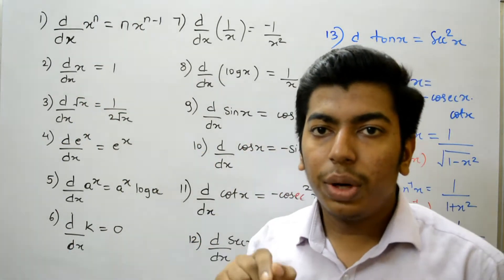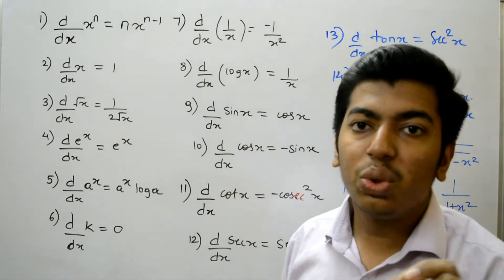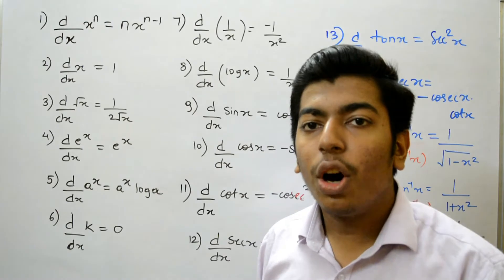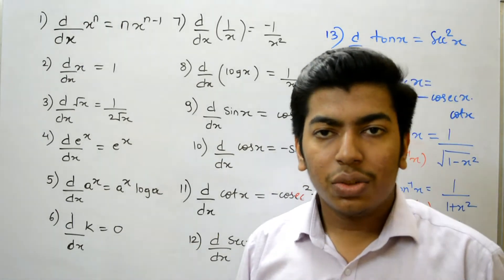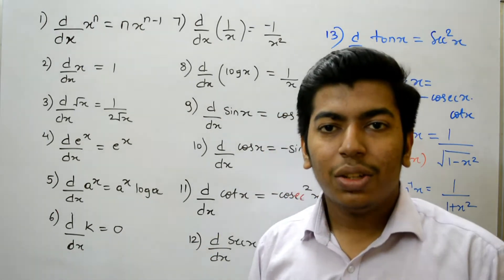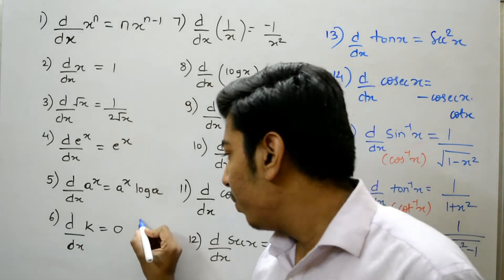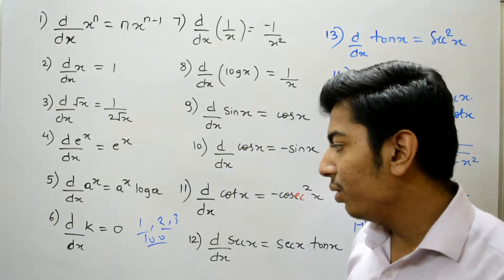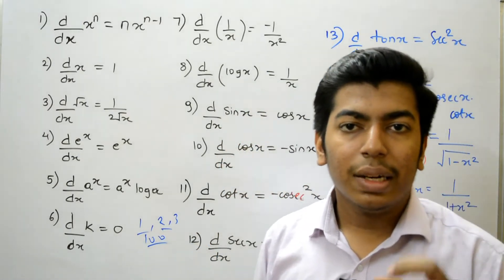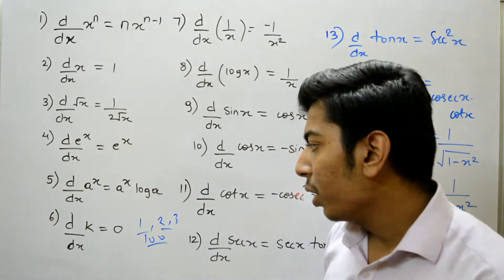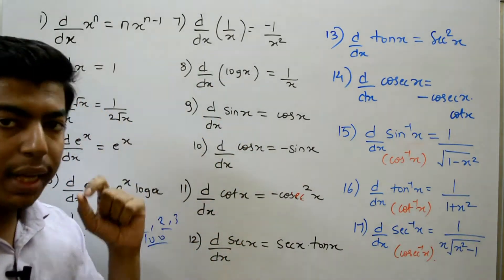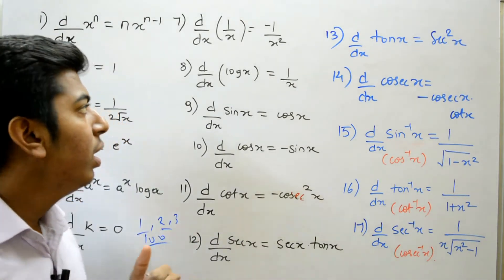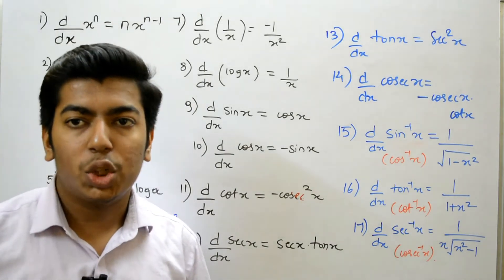The derivative of root x is 1 upon 2 root x. The derivative of e raised to x is equal to e raised to x. The derivative of a raised to x is equal to a raised to x times log a. The derivative of k is 0, where k is a constant term — for example, 1, 2, 3, 100 — all are constant terms with derivative 0. Remember: the derivative of any constant term is 0. The derivative of 1 upon x is equal to minus 1 upon x squared. The derivative of log x is equal to 1 upon x.